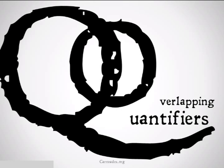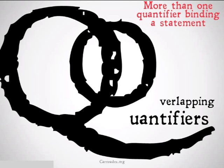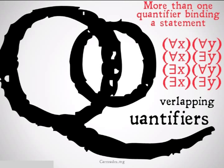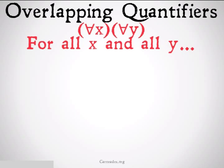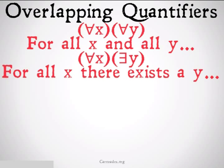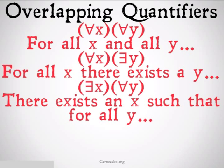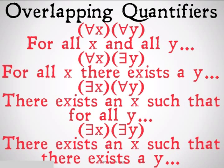We're also going to be introducing today something called overlapping quantifiers. These build on an idea we already had — we had quantifiers as they were, and overlapping quantifiers are just going to be more than one of those binding a statement. Here are some examples with two quantifiers: for all X and all Y; for all X, there exists a Y; there exists an X such that for all Y — and it's important to note that those two are importantly different; and there exists an X such that there exists a Y.